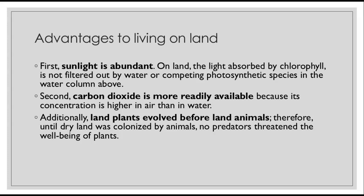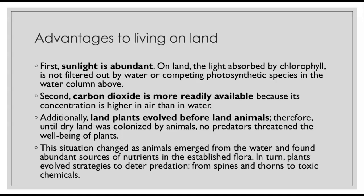Plants also produce oxygen as a byproduct, which we depend on. Additionally, land plants evolved before land animals, so until dry land gets colonized by animals, no predators threaten the well-being of plants. That situation changes as animals emerge from the water and find abundant nutrients in the established flora. In turn, plants then evolve strategies that deter predation — spines, thorns, and being toxic — as ways to avoid being eaten.